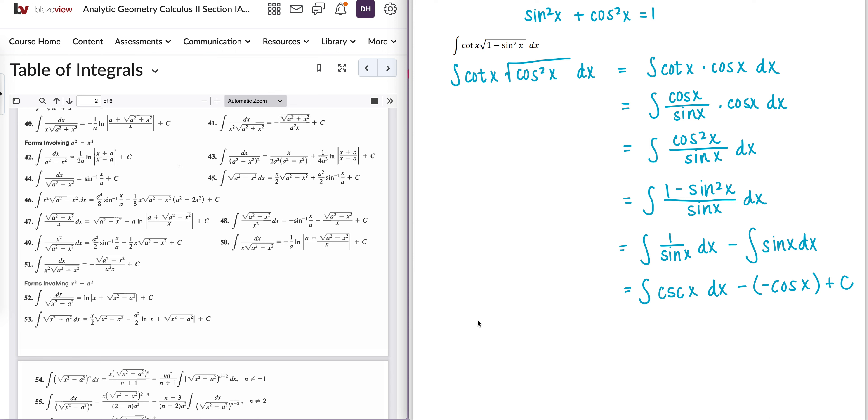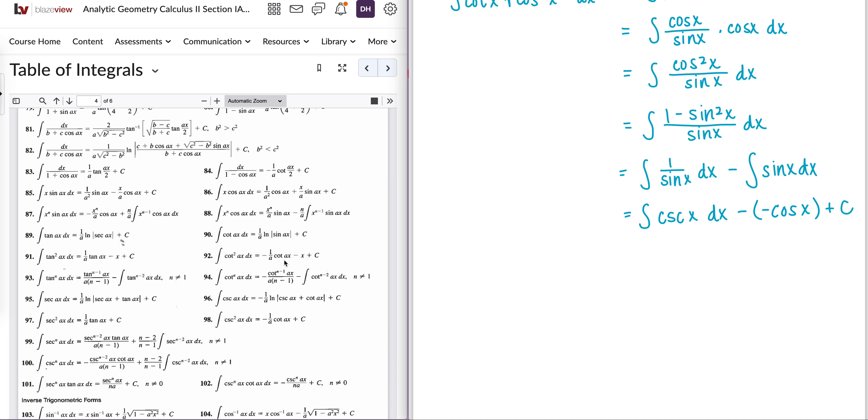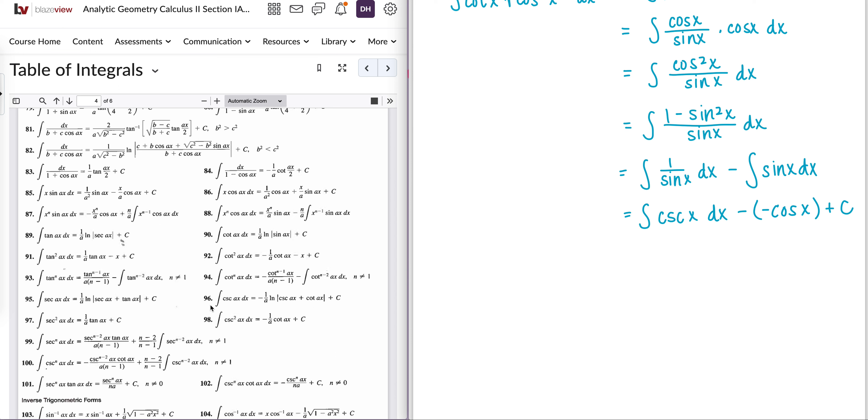So integrating cosecant x, that one is not just an easy one to integrate, but we do have a formula here. If we look at number 96, we've got a formula for this. So cosecant ax dx. In this case, our a is going to be 1. So we're using number 96 with a equals 1.